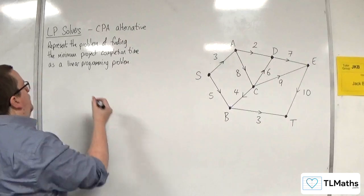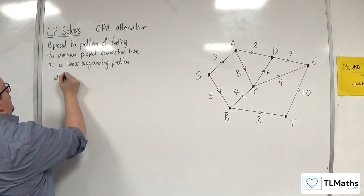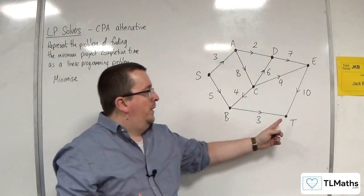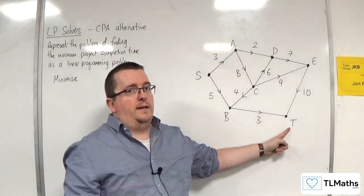First of all, the objective function. I want to minimize whatever the final value is by the time I get to the final vertex, T.